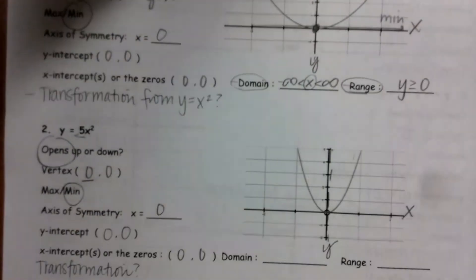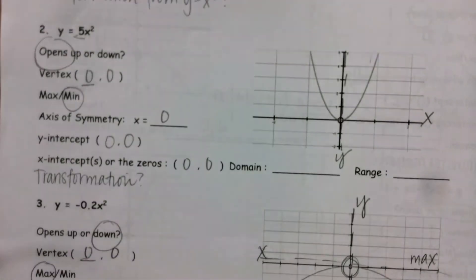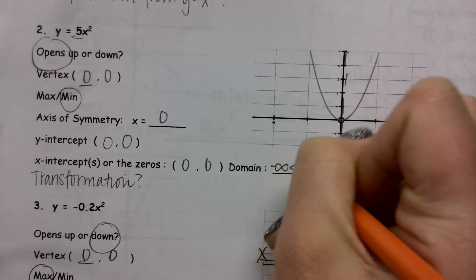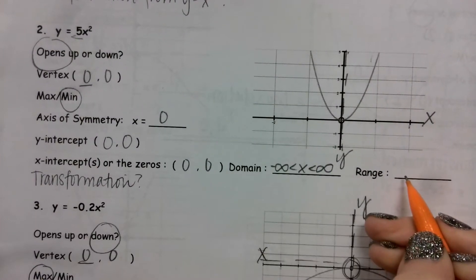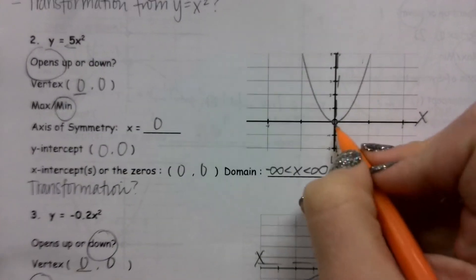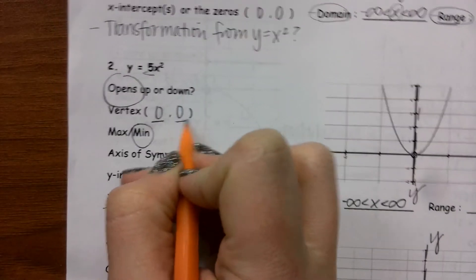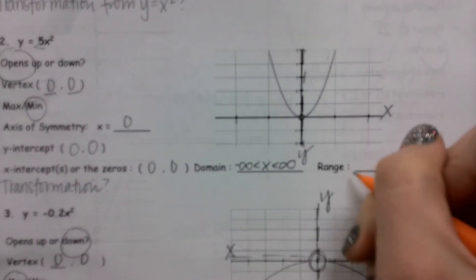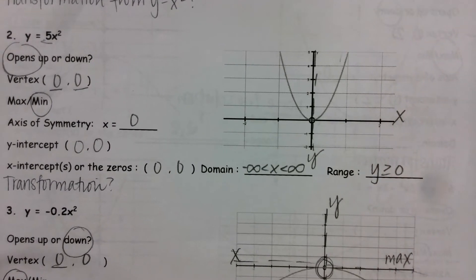Looking at my domain and my range for my second problem, domain is going to be the same thing — negative infinity to positive infinity. My range is going to be the exact same thing as number one, since the y value of my vertex is zero and the direction of the parabola is up. Y is greater than or equal to zero.